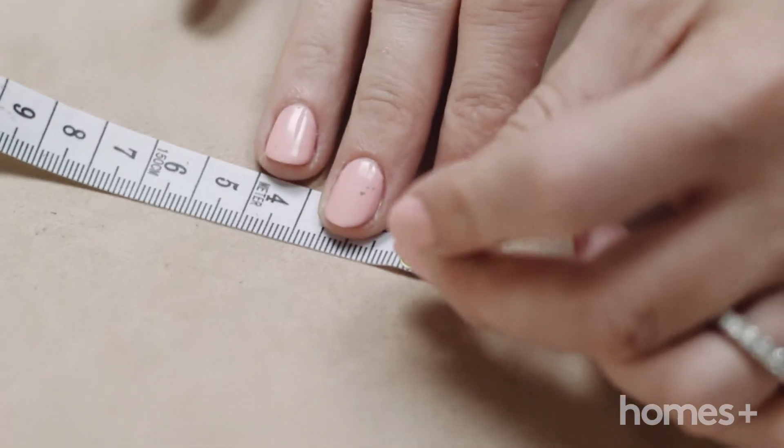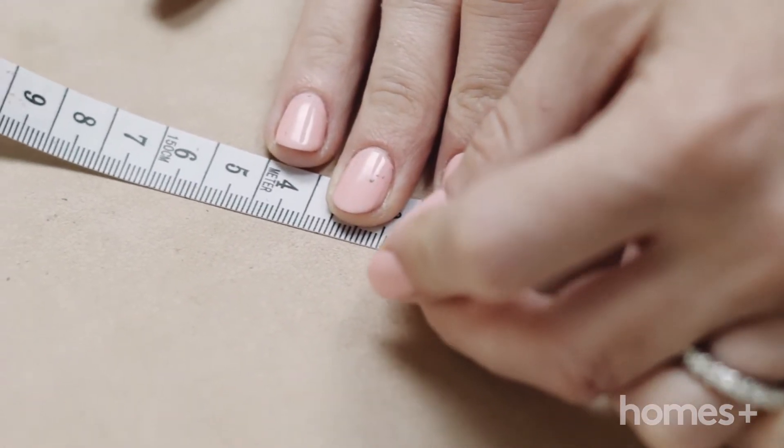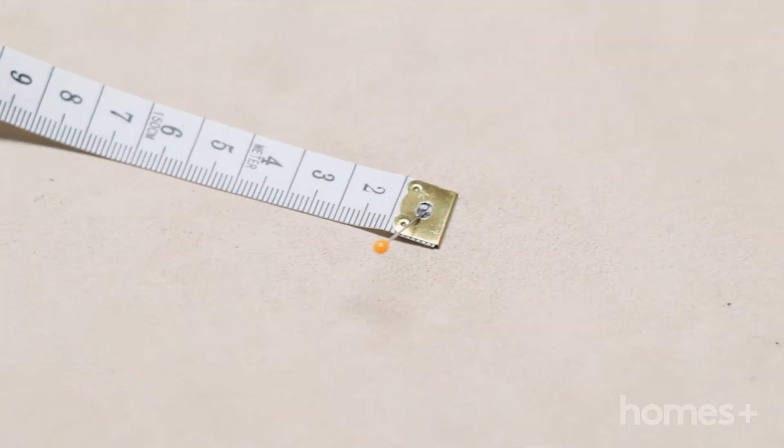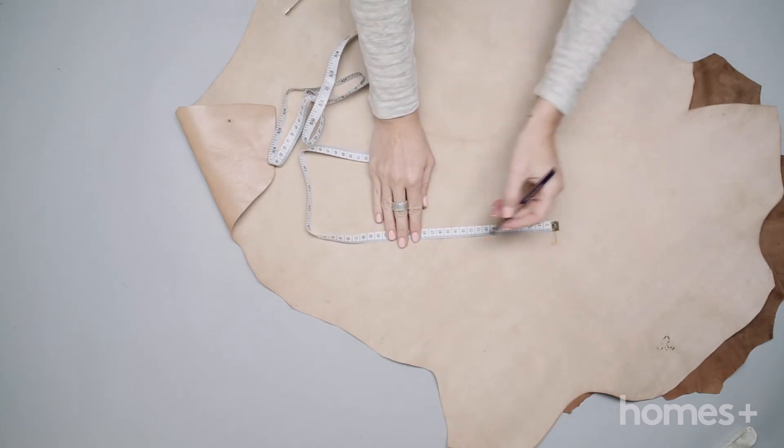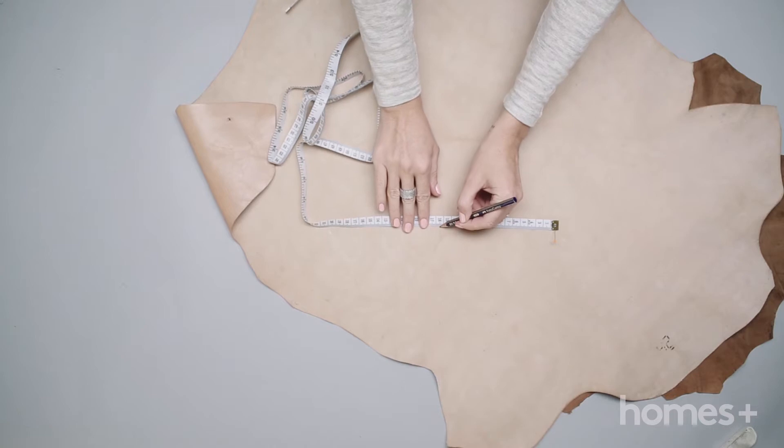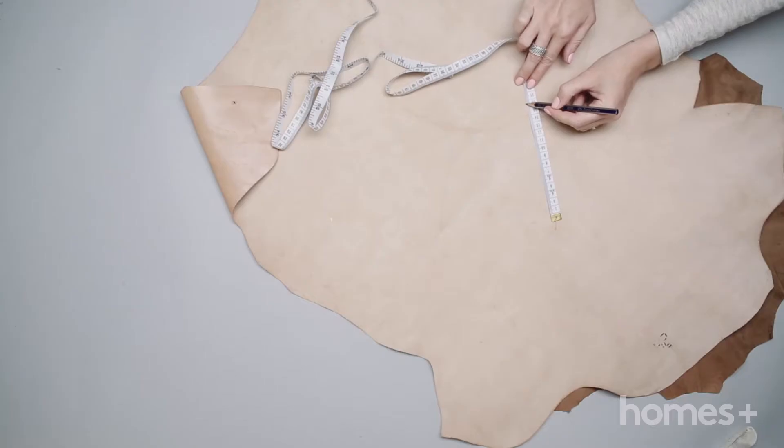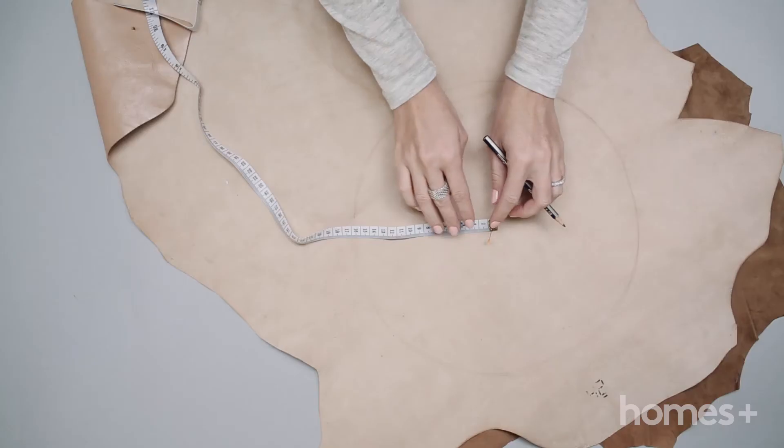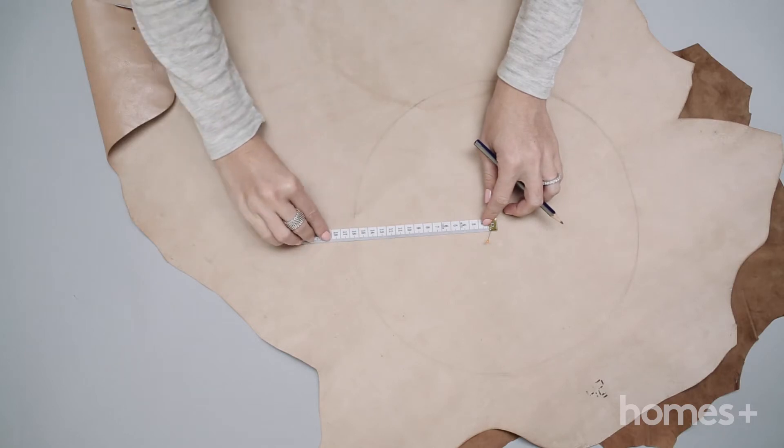Step 1: Make the top and bottom cover. On the underside of your leather, use a small pin as an anchor point and draw a circle that is the width of the stool top. Draw another circle two centimeters bigger than this circle.